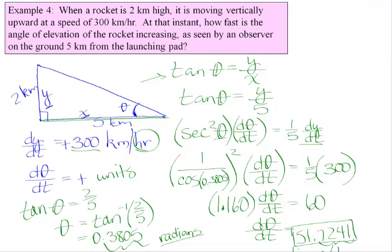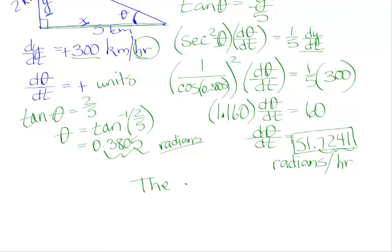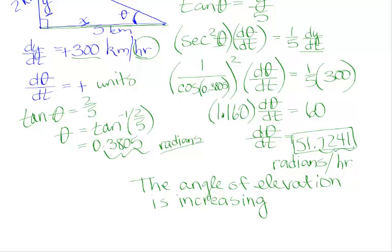So, at the instant, how fast is the angle of elevation of the rocket increasing? In words, the angle of elevation is increasing at a rate of 51.7241 radians per hour. That's a lot of radians. All right. There we go.